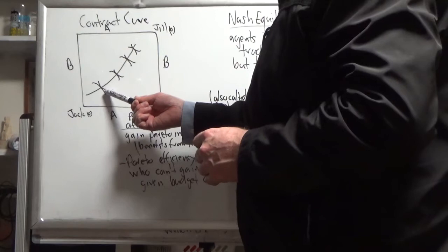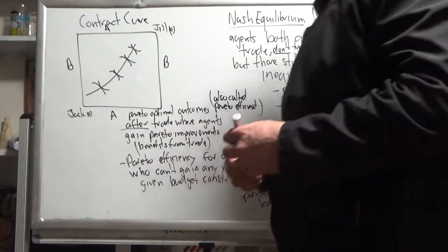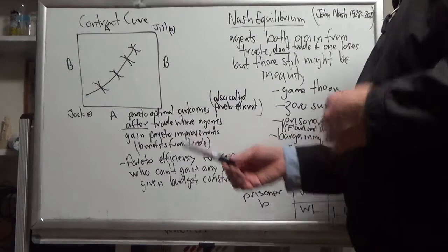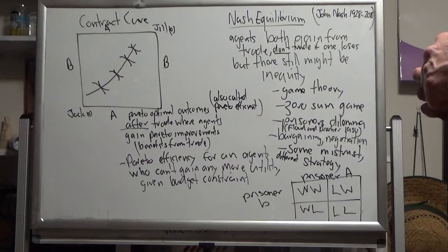However, they might not be equitable. That one seems to be skewed to Jill, and that one seems to be skewed to Jack, so equity is a consideration in this model as well. All the Pareto optimal outcomes after trade where agents gain Pareto improvements, benefits from trade. At Pareto efficiency, they can't gain any more utility given a budget constraint.